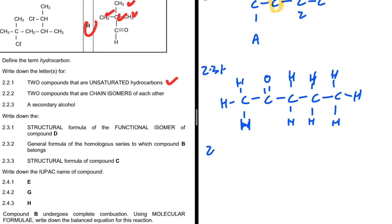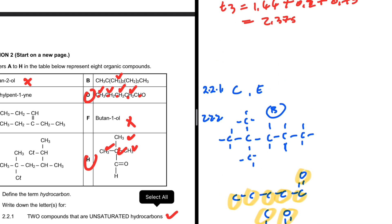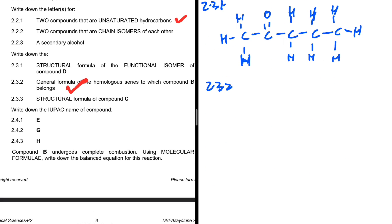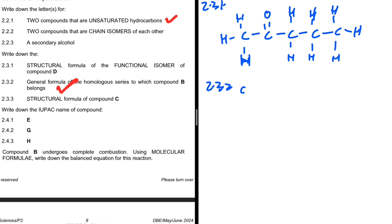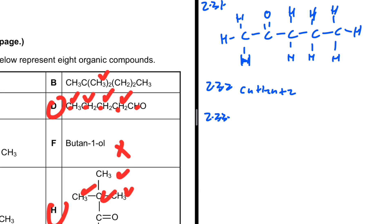Question 2.3.2: find the general formula of the homologous series to which compound B belongs. Compound B has single bonds throughout and only carbon and hydrogen, so it is an alkane. The general formula of an alkane is CₙH₂ₙ₊₂.